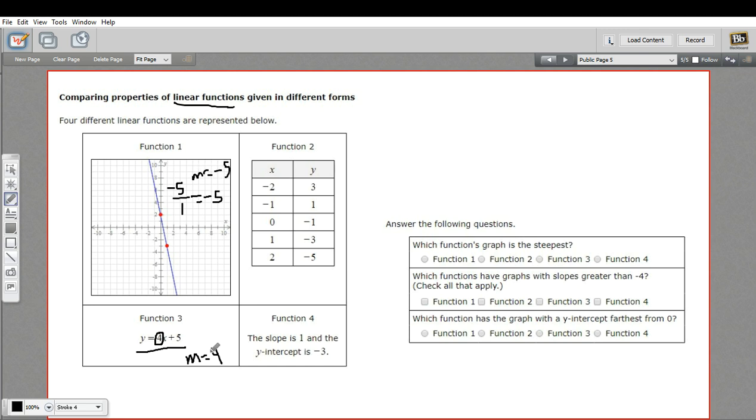And that's actually steeper than this m equals four because the magnitude of the number is what matters. Absolute value of these, this is five, this is four. Let's look at these other two.